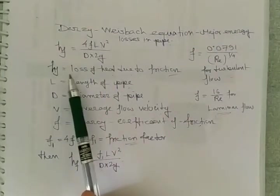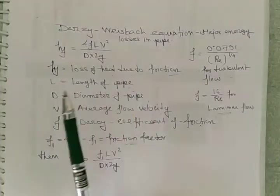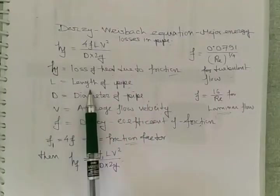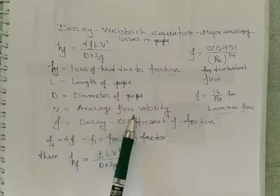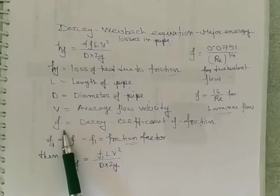Where hf is loss of head due to friction, L is length of the pipe, D is diameter of the pipe, V is average flow velocity.